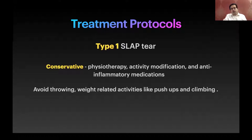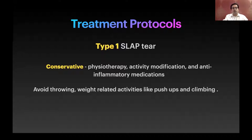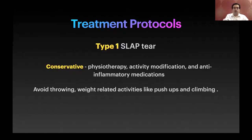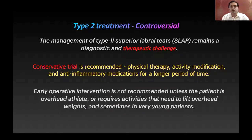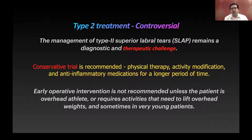How do you treat once you know there is a SLAP tear? Type 1 SLAP is pretty straightforward — management is conservative: physiotherapy, activity modification, and anti-inflammatory medications. Explain to the patient to avoid throwing, weight-related activities like push-ups, and overhead activities. Type 2 is the most common and most controversial. It is prudent to give a conservative trial first. Early operative intervention is usually not recommended unless the patient is an overhead athlete, requires overhead lifting, or is very young.